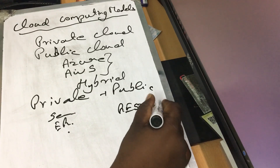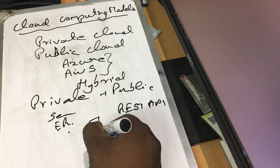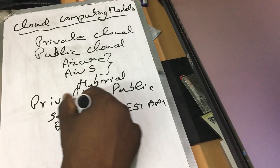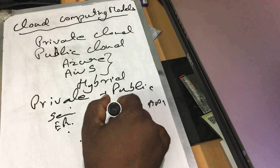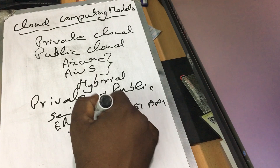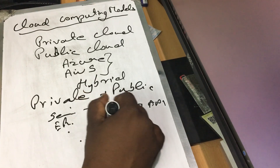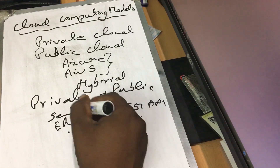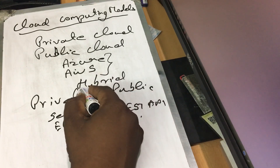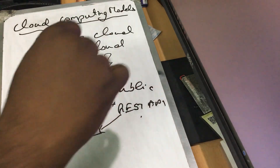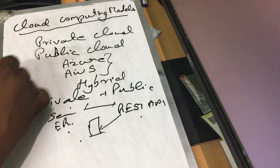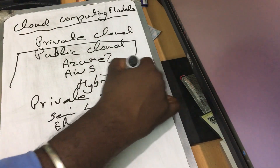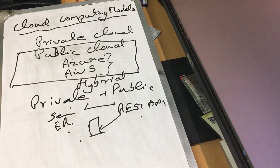We create a REST API and a public application. We use the API and the mobile application through a gateway. We transfer data between private and public — this is a hybrid cloud. So we have private cloud, public cloud, and hybrid cloud.